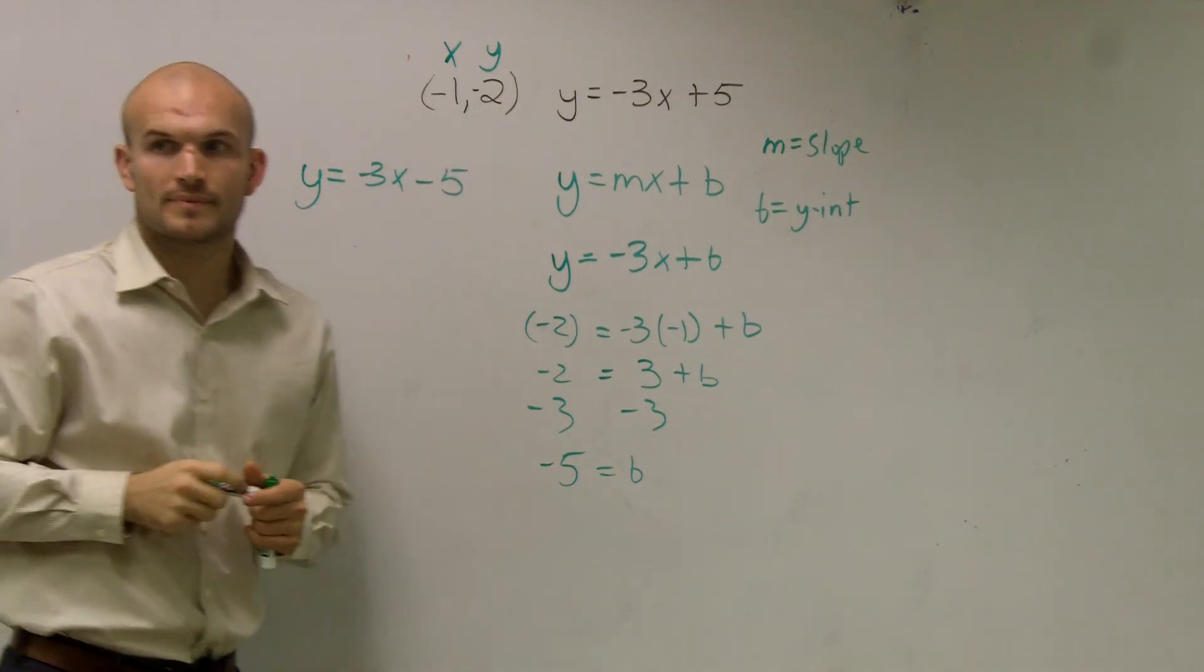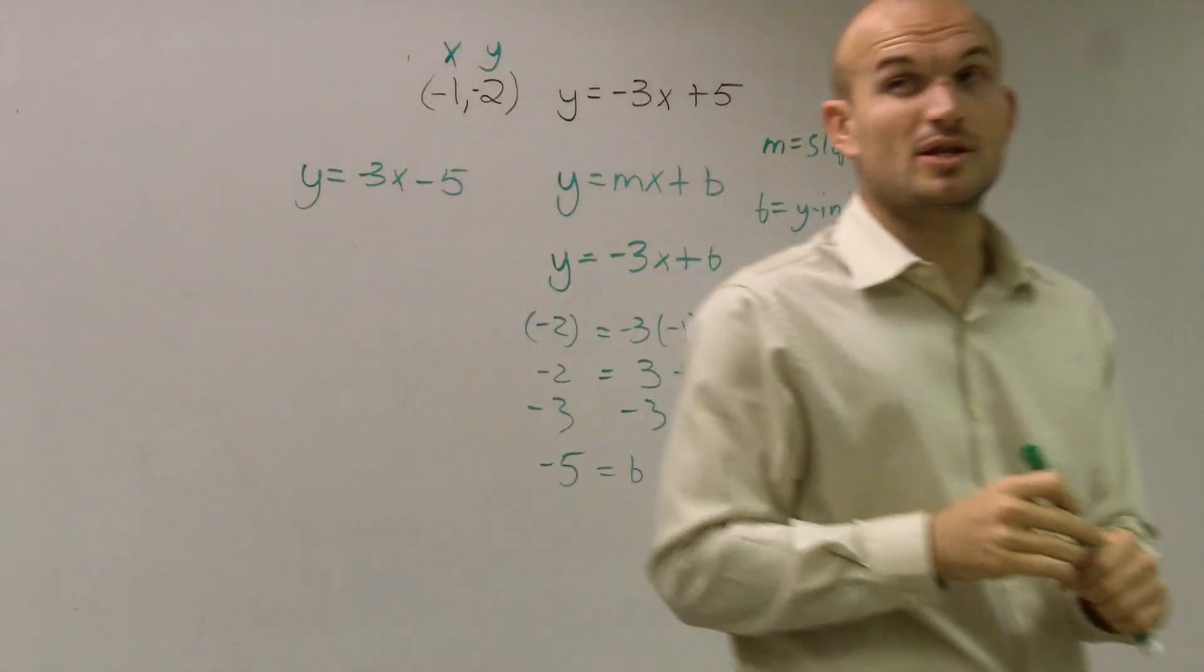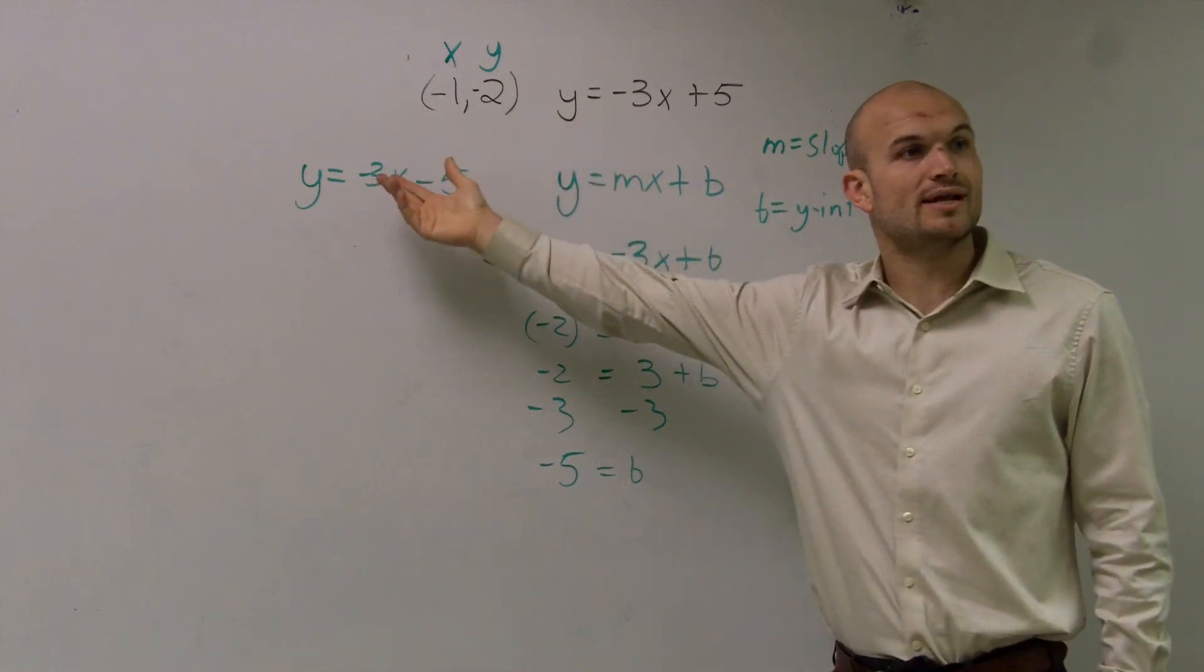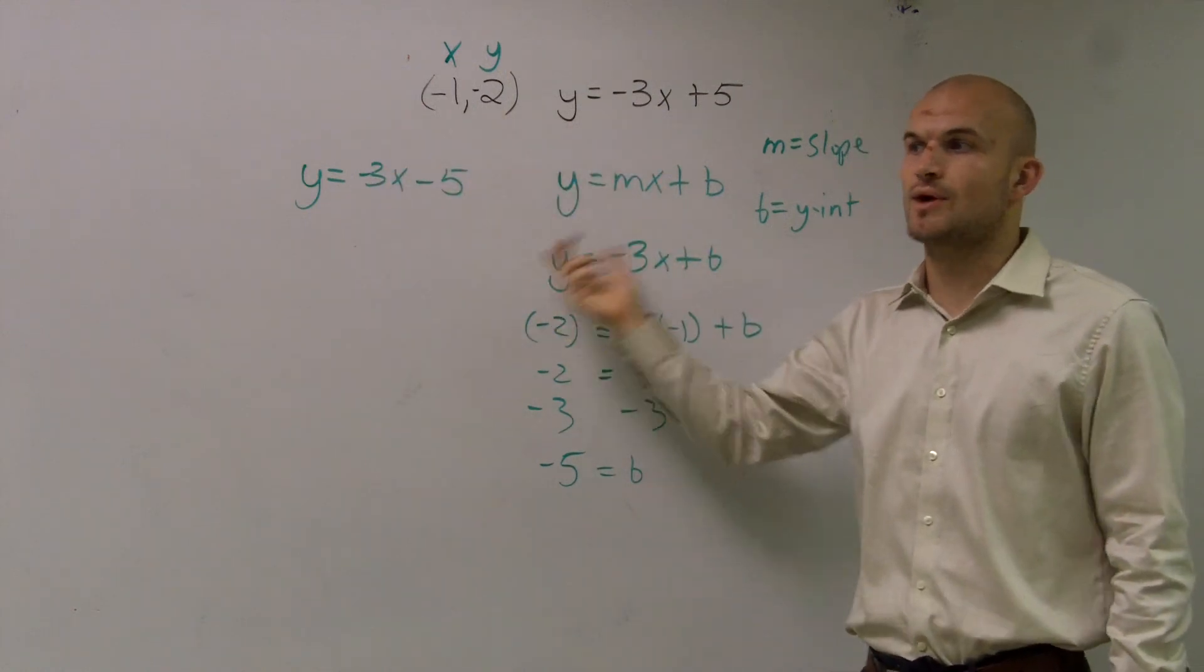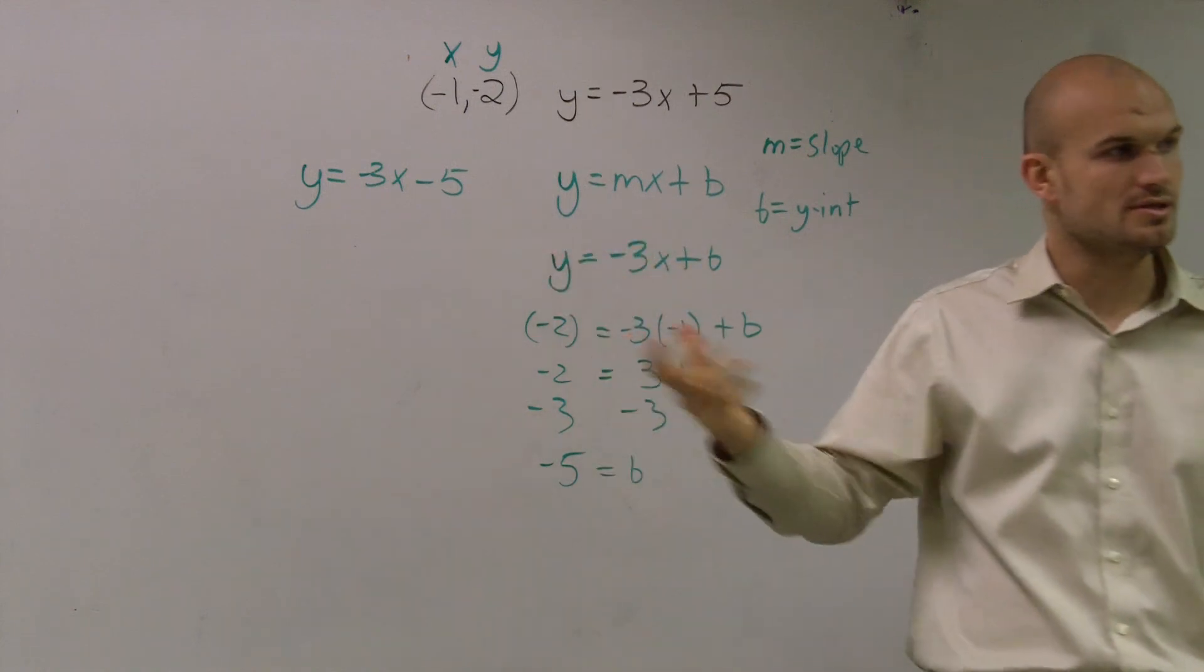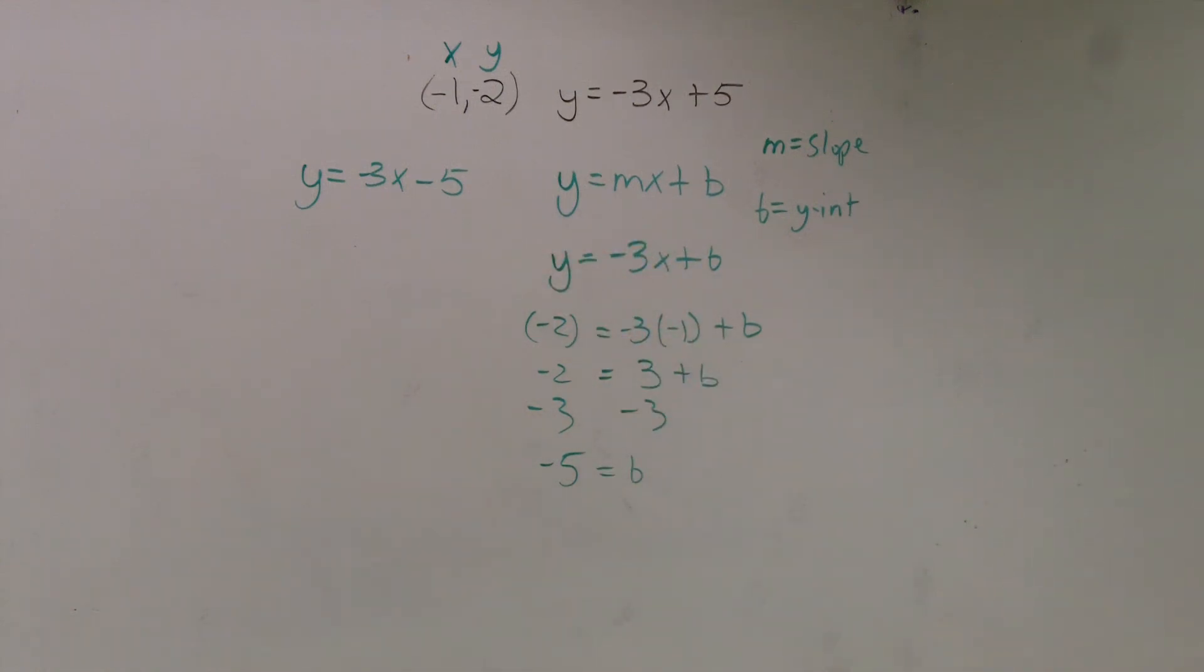Got it? So just remember, guys, when you're dealing with parallel lines, you keep the slope exactly the same, and then you find whatever point it goes through and plug them in for x and y to find your new b. Once you know what b and m are, you plug them into the equation, and you got it.